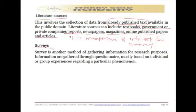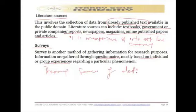Survey is another method of data collection for research purposes. Information is gathered through questionnaires, mostly based on individual or group experiences regarding a particular phenomenon. This type of source is a primary source of data. There are several ways by which this information can be collected; the most notable is through web-based or paper-based questionnaires. The results of this method of data collection are generally easy to analyze.